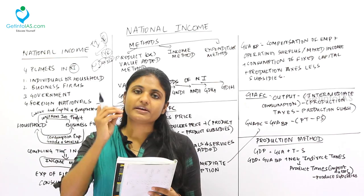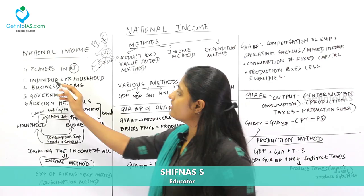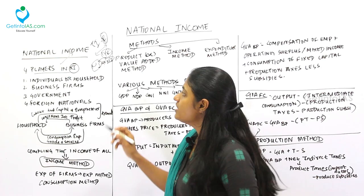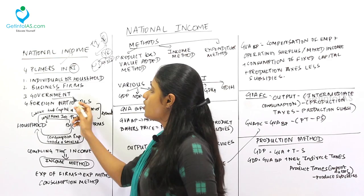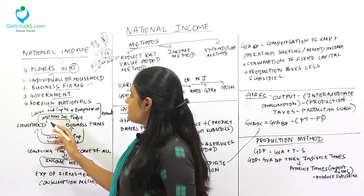There are various methods to calculate national income, but before that let us learn about demand and supply in our economy. There are four players who contribute to the national income: the first is individuals or households, the second is business firms, the third is the government, and the fourth is foreign nationals.